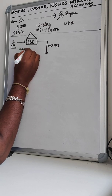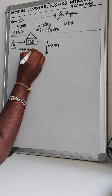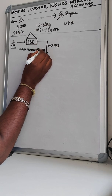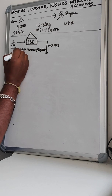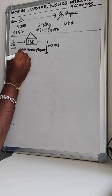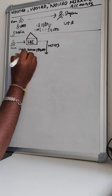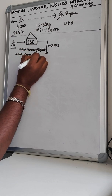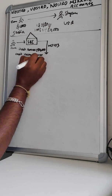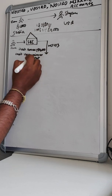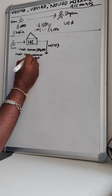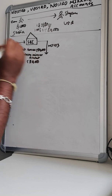What happens here is some accounting entries happen at SBI. It will debit Ram's account — one thousand dollars is equivalent to 80,000 Rupees (at 1 dollar = 80 Rupees). So SBI will debit Ram's account by 80,000 Rupees and then credit the Nostro Mirror account with 80,000 Rupees.